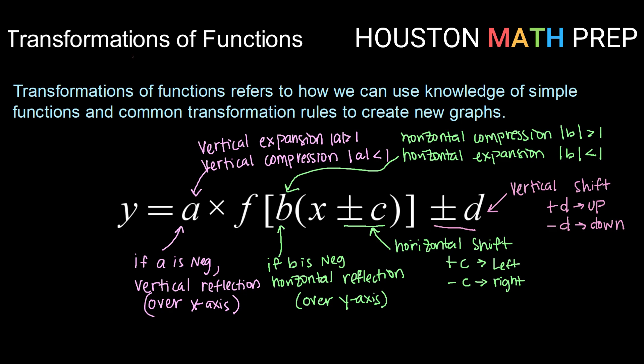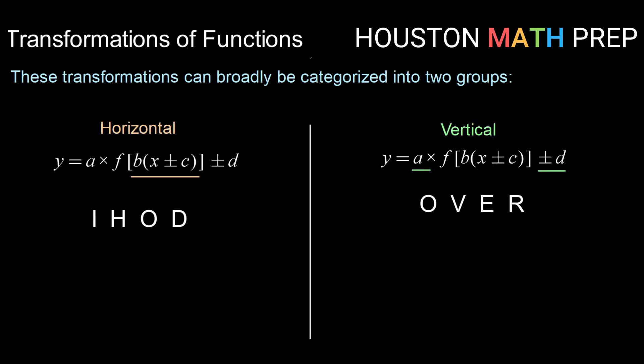So these actually fall into some pretty predictable patterns, and we have some quick and easy ways to remember those patterns. These transformations can broadly be categorized into two groups. Things that affect our graph horizontally, so left to right changes, and things that affect our graph vertically, up and down changes.